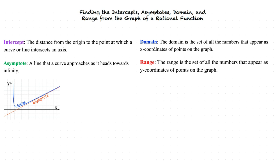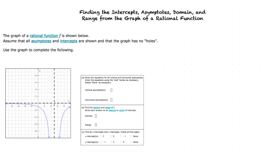Now that we've reviewed, let's look at some example problems. In this example, we are being asked to analyze the graph of the rational function shown below, and use the graph to determine the vertical and horizontal asymptotes, domain and range, and x and y-intercepts. This problem looks really difficult — there's so much to do! But if we break it down piece by piece, it won't take too long.